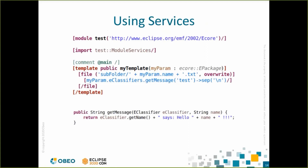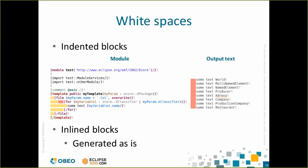In Acceleo 4, whitespace management has also been changed. We didn't want to add a specific language construct for static text, but at the same time we want to differentiate the template indentation from the generated text indentation. So we introduced a mandatory indentation of two characters in blocks — shown in yellow — which are not generated in the output. To keep generated indentation, the last generated line is used to indent the generated output, shown in red. Inlined blocks will be generated as-is, so you can still fine-tune your output text.